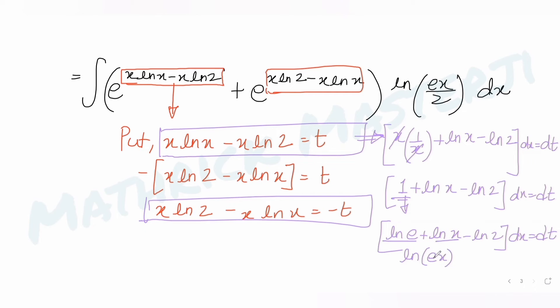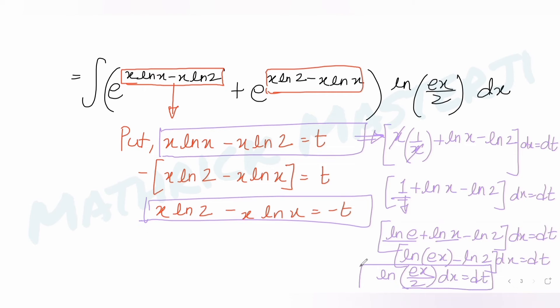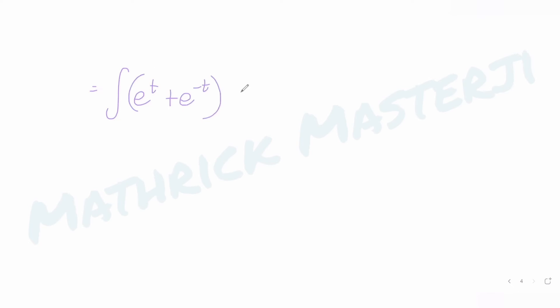Using log a − log b = log(a/b), we confirm that log(ex/2) to the base e · dx = dt. So the entire integral becomes: integral of e^t dt plus integral of e^(−t) dt.